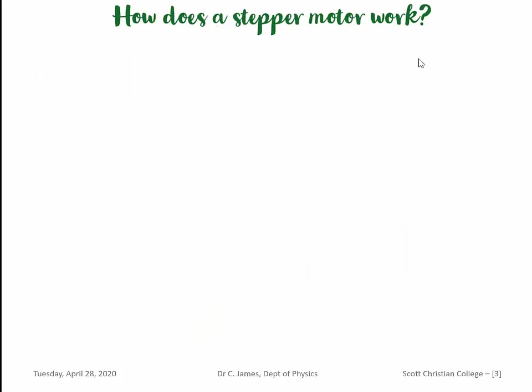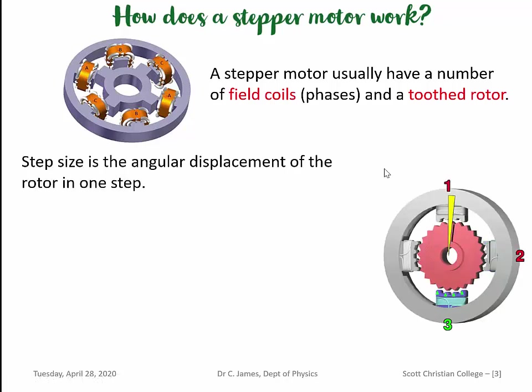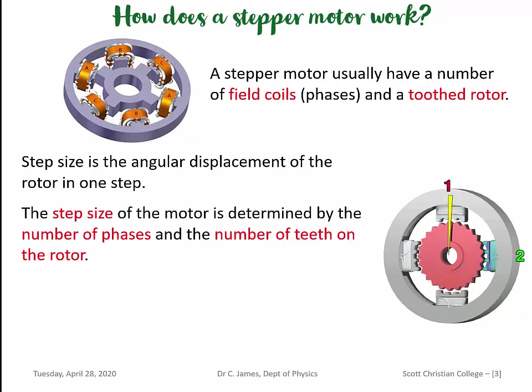Now, let us see how a stepper motor works. As already mentioned, a stepper motor has a certain number of field coils — we call them phases — and a toothed rotor in the central portion. In this particular motor, you see four teeth and A, B, C — three pairs of field coils. If we have pairs of field coils, we say it is a bipolar motor. In some motors, they use unipolars. In the present system, we use a unipolar motor, where the rotor has several teeth and the field coils also have four teeth.